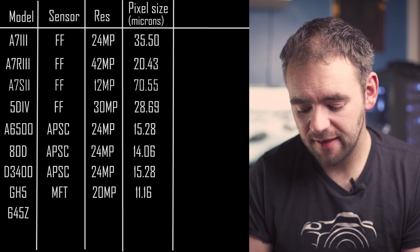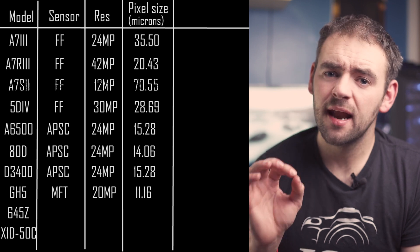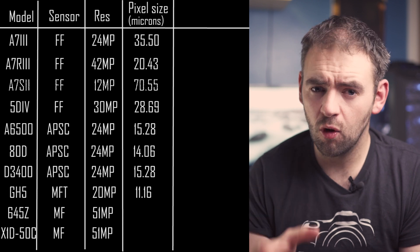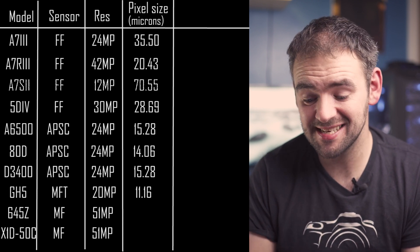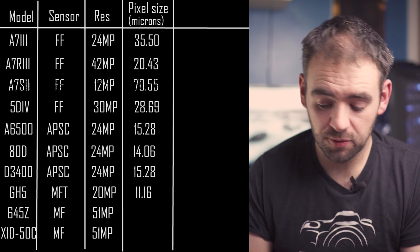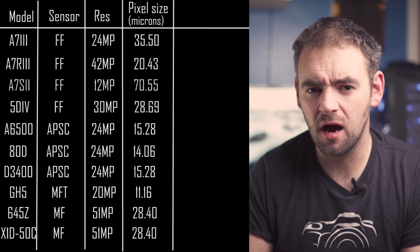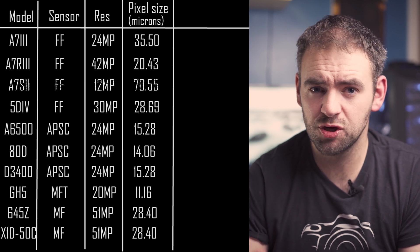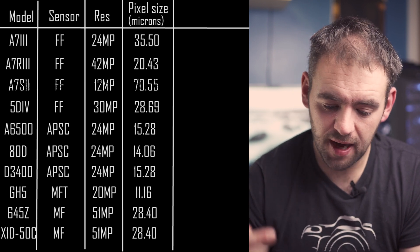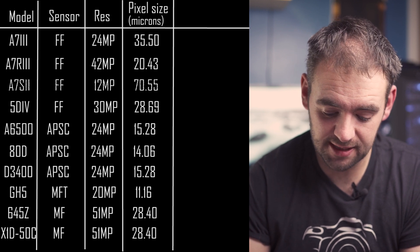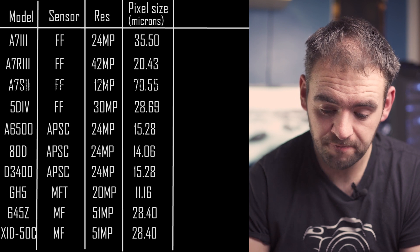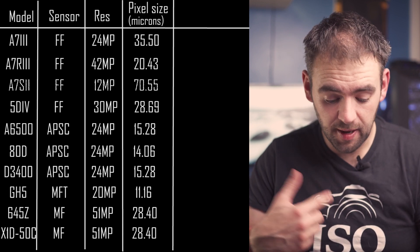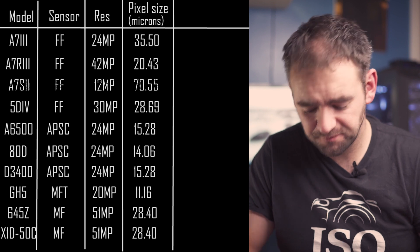Then the Panasonic GH5, a Micro Four Thirds camera at 20 megapixels — lower resolution than the APS-C cameras but also a smaller sensor — giving a pixel size of just over 11 microns. Finally, the Pentax 645Z and the Hasselblad X1D50C: both 51-megapixel cameras, the highest resolution of them all, but they are medium format cameras with a physically much bigger sensor, giving a pixel size of about 28.5 microns. So in a one-to-one viewing, by pixel size versus noise, we should see the A7S II have much better noise performance, followed by the A7 III, followed by the Pentax, the Hasselblad, and the 5D Mark IV, followed by the A7R III, then the A6500 and the D3400, then the 80D, then the GH5.